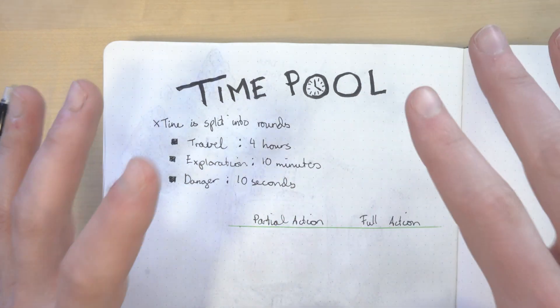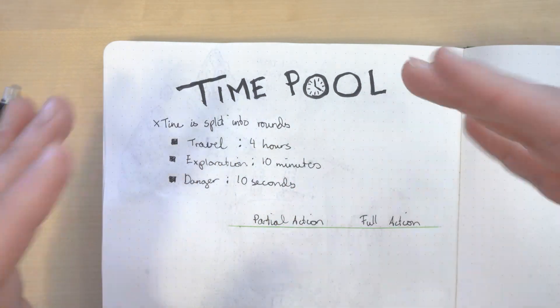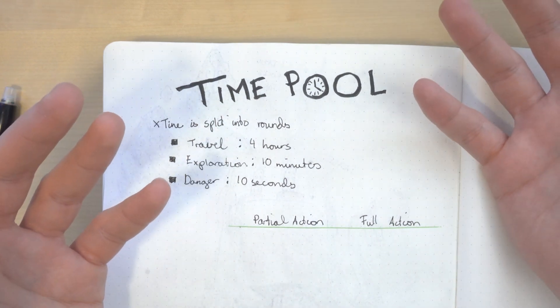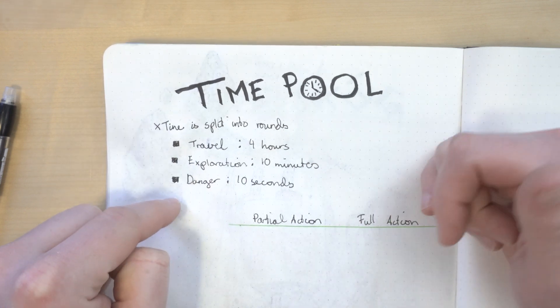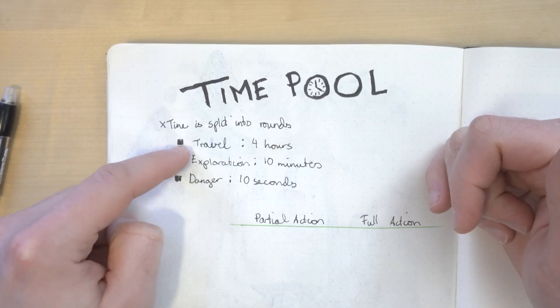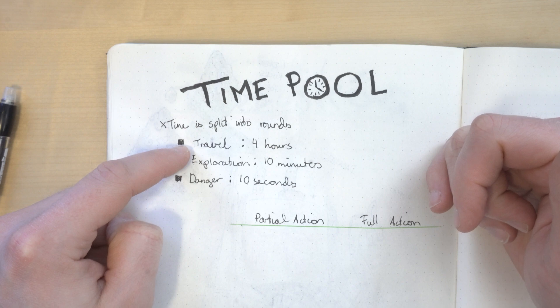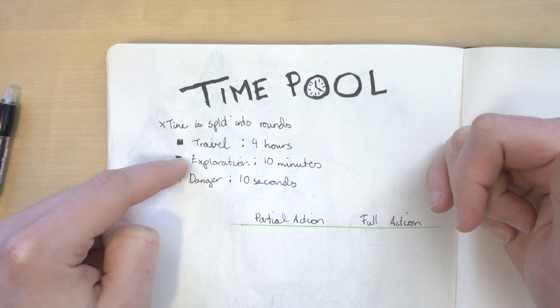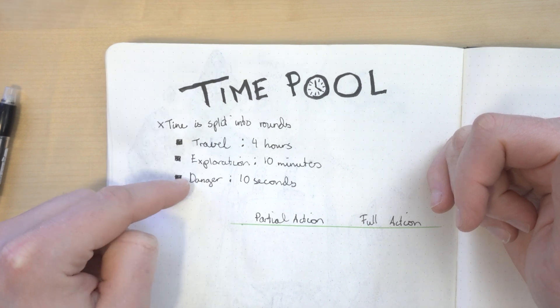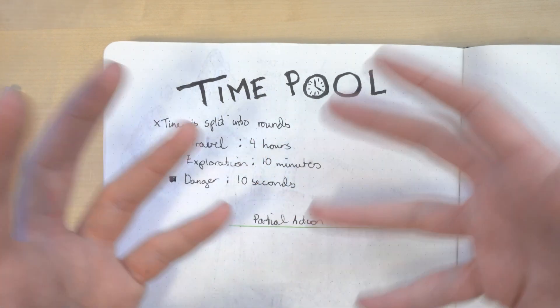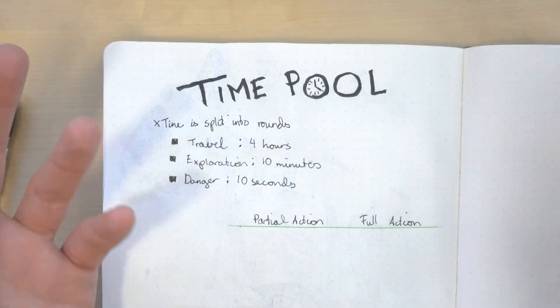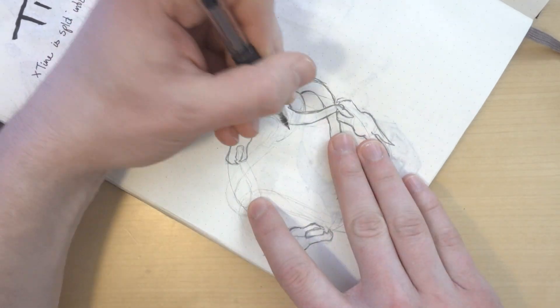And there's three modes of time as well to make it more complicated: travel, exploration, and danger. In travel mode, each round is about four hours. In exploration mode, each round is about 10 minutes, and in danger mode, each round is about 10 seconds.